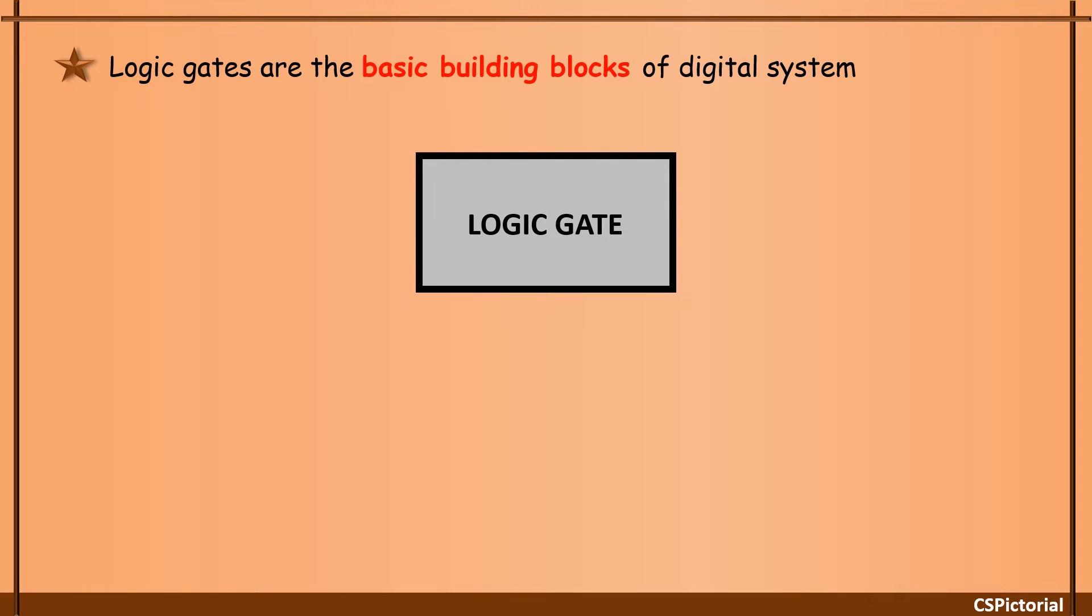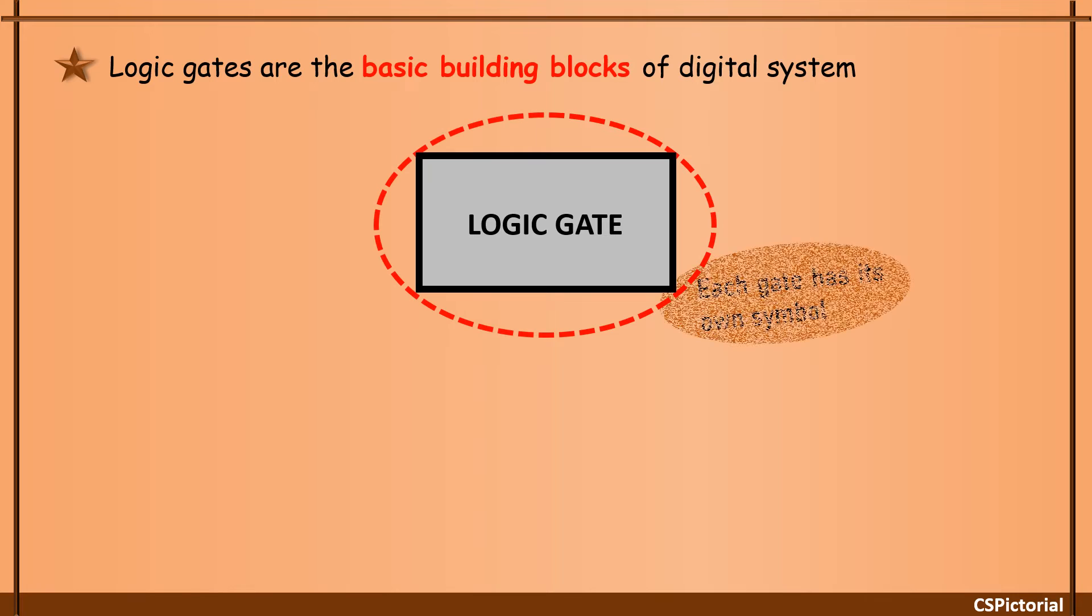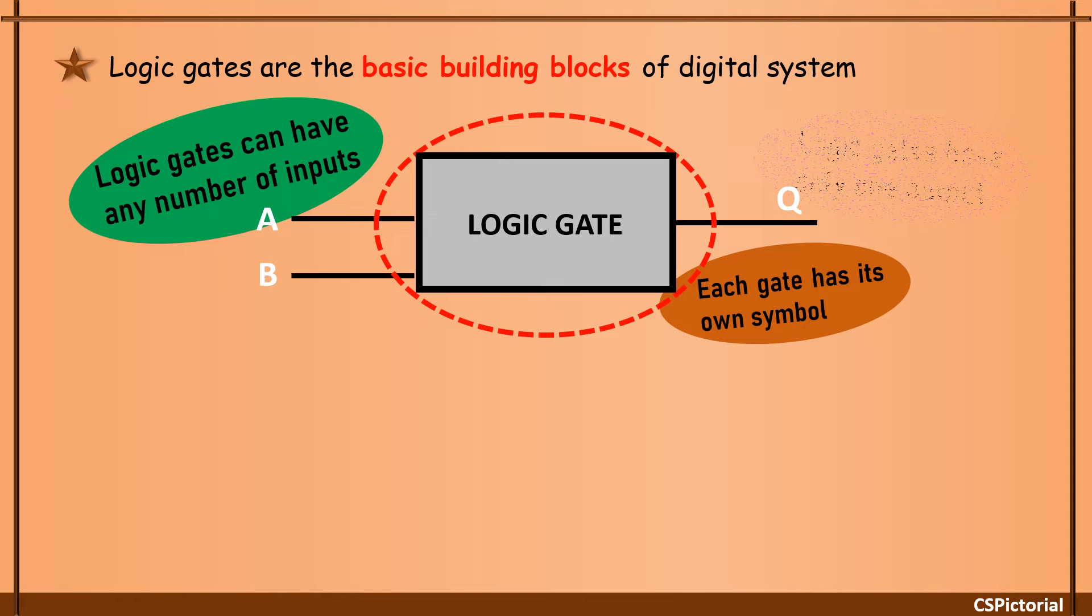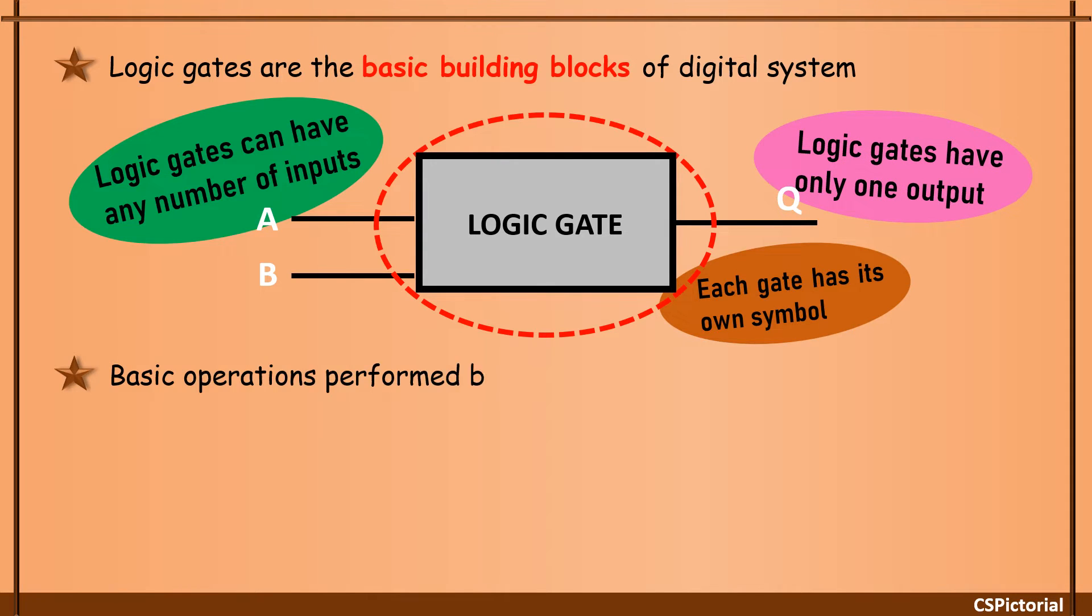Logic gates are the basic building blocks of a digital system. Each logic gate is represented with its own symbol. The lines on the left denote input to the gate. A logic gate can have any number of inputs except the NOT gate that has only one input. The line on the right denotes output from the gate. All gates can have only one output.